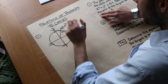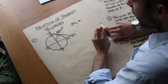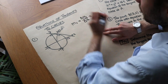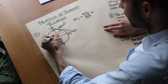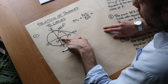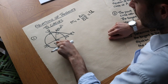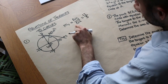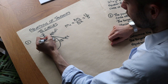The gradient of the radius, mr, is equal to change in y over change in x when we have two points. We have two points on this line: the origin (0, 0) and the point (5, 12). The change in y from 0 to 12 is 12, and the change in x from 0 to 5 is 5, so the gradient of the radius is 12 over 5.